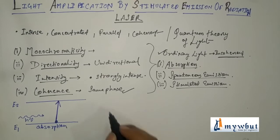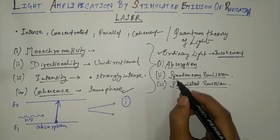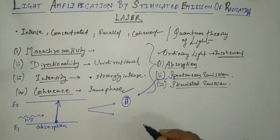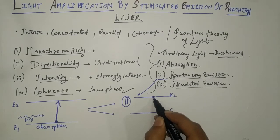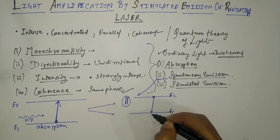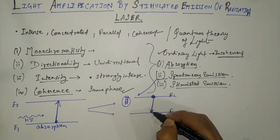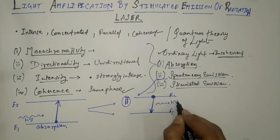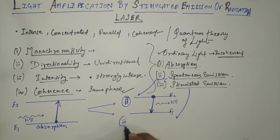After absorption, two things may happen. Number two is spontaneous emission. The excited atom in E2 may come to its natural lower energy state E1, since every object in the universe tends to stay in its minimum energy state. The atom comes spontaneously to the lower energy state, giving away a photon with energy hν.